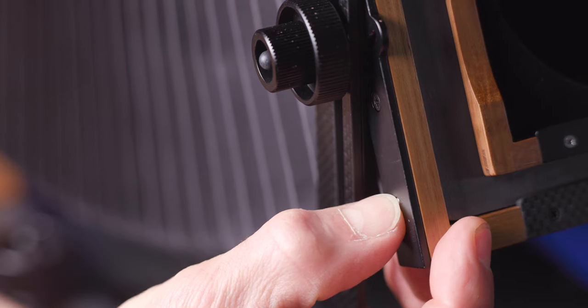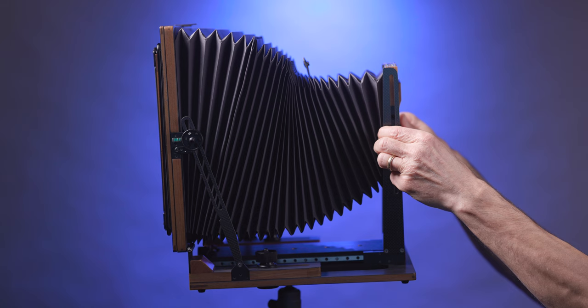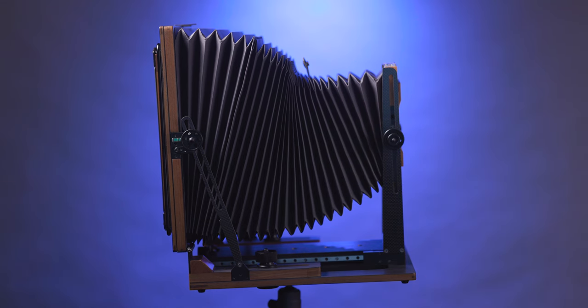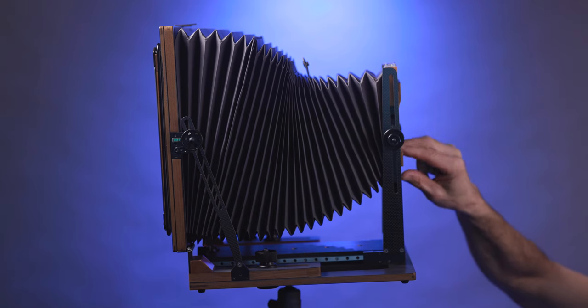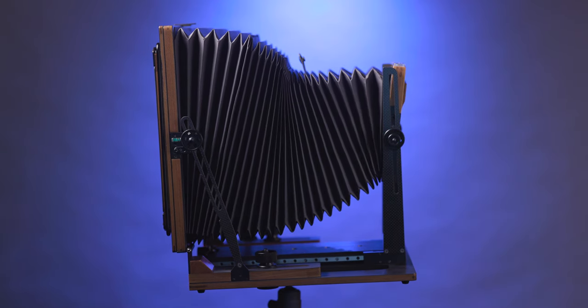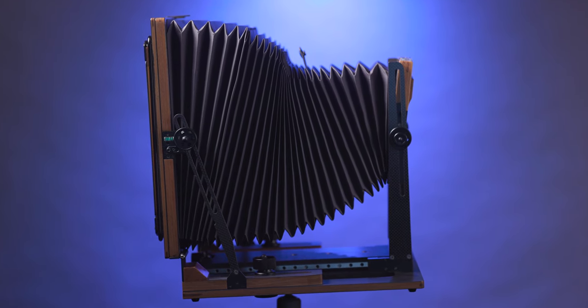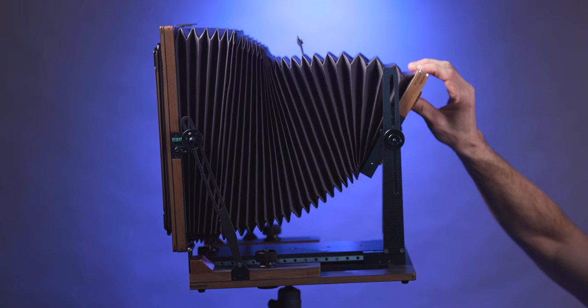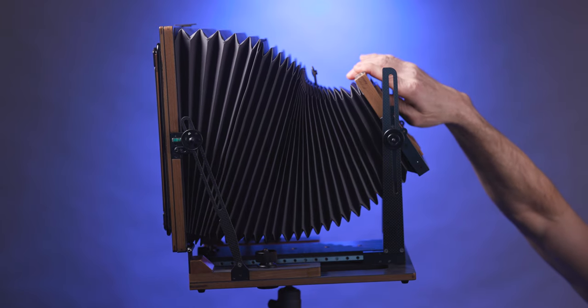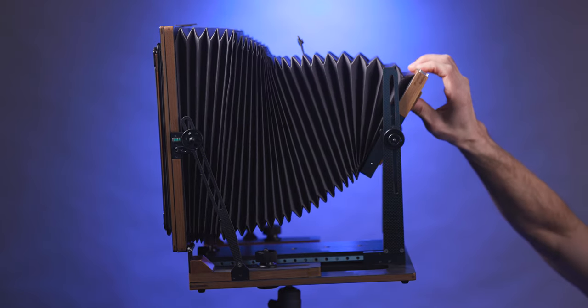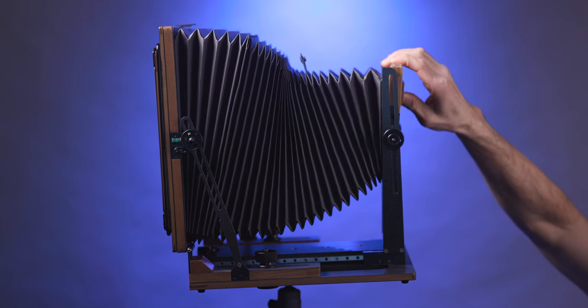But wait! There's more! Chamonix has also built in a spring-loaded ball bearing detent mechanism to make it fast and easy to bring the lens tilt back to the zero position. This same mechanism also allows for a default forward lens tilt of 10 degrees without having to lock the front standard frame in place. It's an absolutely smooth and refined mechanism that allows for lens tilt up to 30 degrees in either direction.